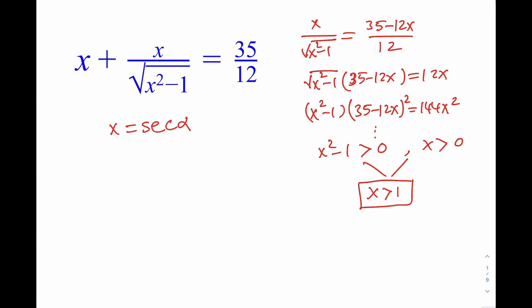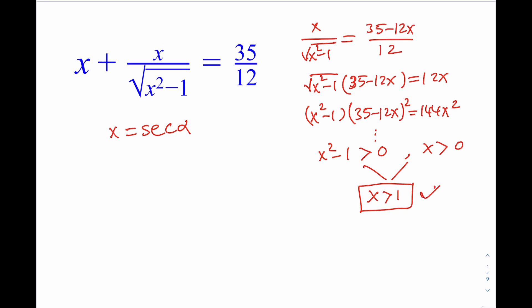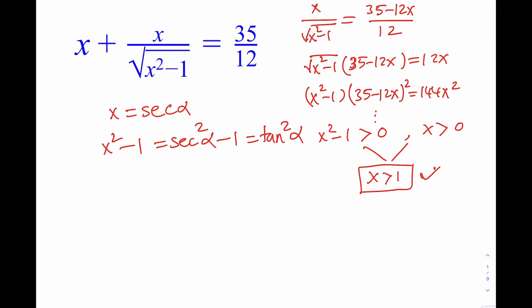It makes sense to replace x with secant alpha because the range of the secant function is outside of negative 1 and 1 — secant is 1 over cosine, cosine is between negative 1 and 1 inclusive, so secant must be outside that range as the reciprocal. And here's the key benefit: if you replace x with secant, x squared becomes secant squared, and x squared minus 1 becomes secant squared minus 1, which equals tangent squared. Something nice is going to come out of this, just like in integrals where we replace x with secant alpha.